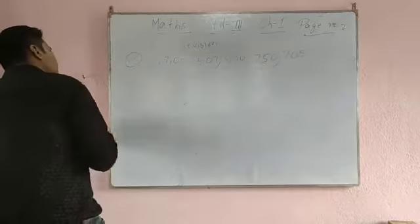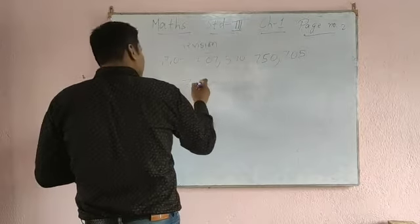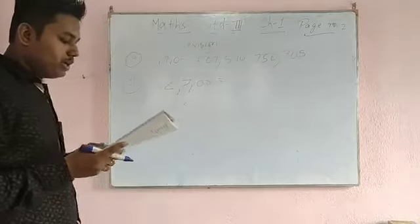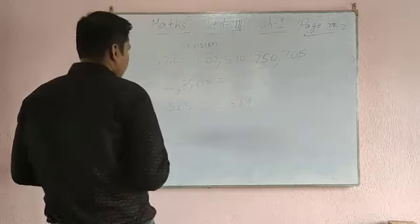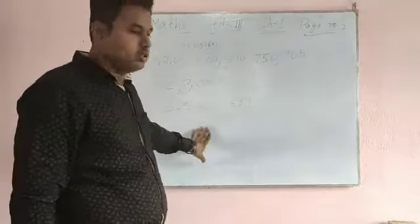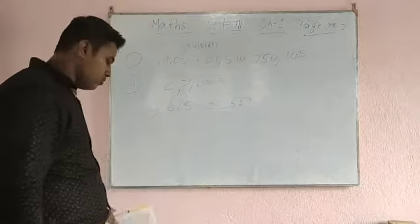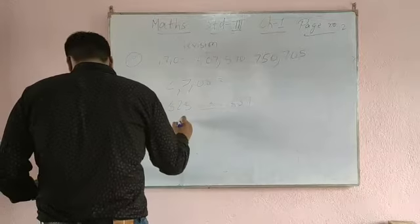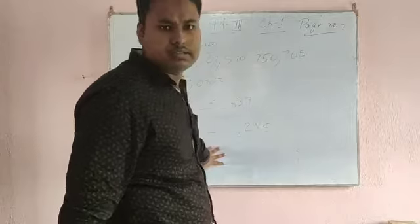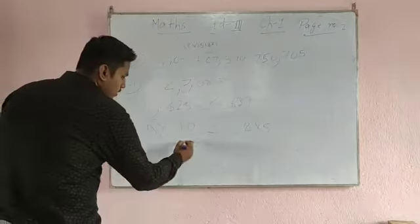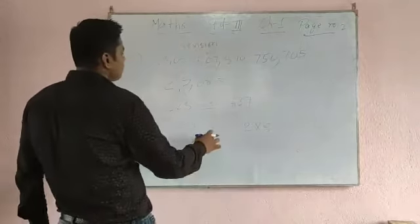Now we go to question number 21: use the greater-than, less-than, or equal sign to make the following sentences correct. For example, 655 and 657 — which is greater? 657 is greater, so you give the less-than sign. You can also see an equal example: 10 in the blank, 2 times 5. First solve 2 times 5, which equals 10. Here also 10, so both sides are equal — you use the equal sign.